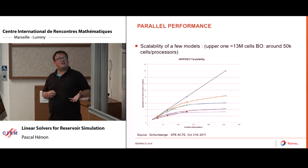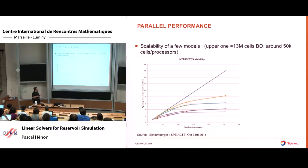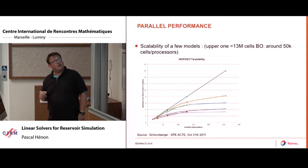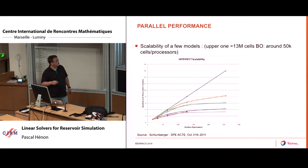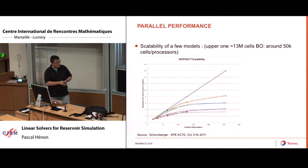One of the big challenges in reservoir simulation is that we don't have simulations that scale very well. The main reason is due to the solver. This is the scalability curve for some typical reservoir simulation — this line is for the biggest model, a 13 million cell model. At the starting point, you have around 50,000 cells per core, and as you can see, the scalability is rapidly decreasing. We are trying to improve this situation, because as I said, we have many runs to do for the history matching.